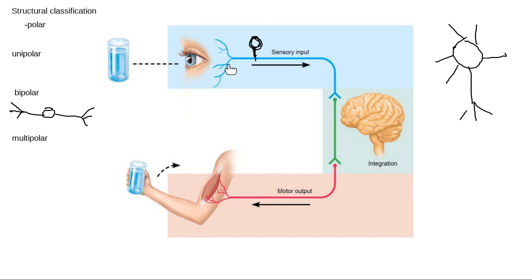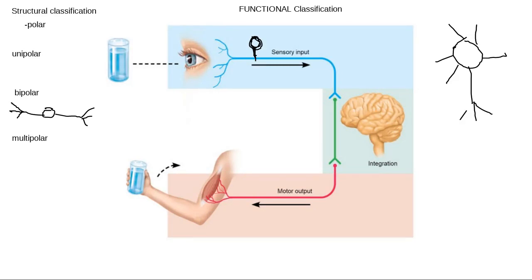In unipolar neurons, there's just one extension coming off of the cell body, so any information collected is sent away right away. Unipolar, bipolar, and multipolar — those are the structural classifications of neurons. Primarily in lecture class, we're going to focus on the functional classification.